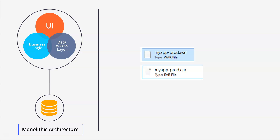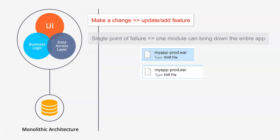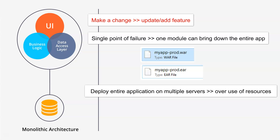There are numerous advantages of monolithic architecture, but here I'll talk about a few major disadvantages. First, if you want to update or add a new feature, you need to redeploy the entire application. Second, if any module goes down, your entire application goes down, causing a huge business impact. Third, if you want to handle huge traffic, you need to deploy the entire big application on multiple servers.